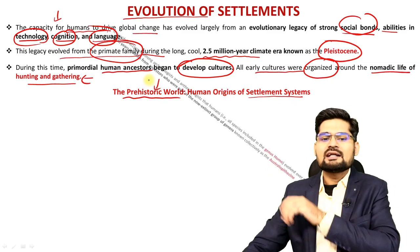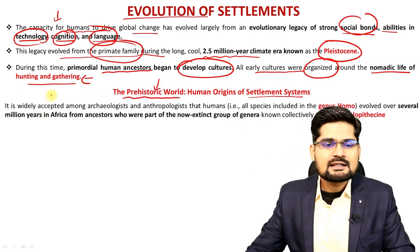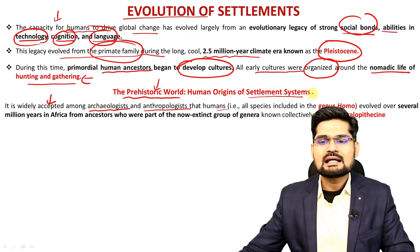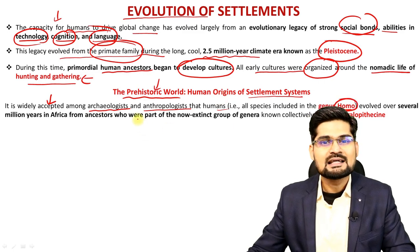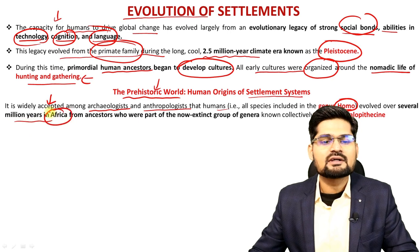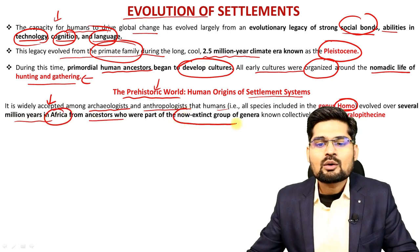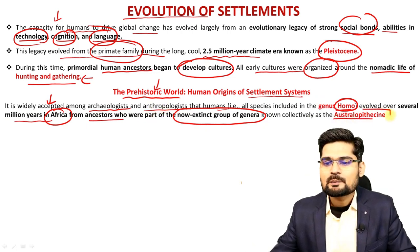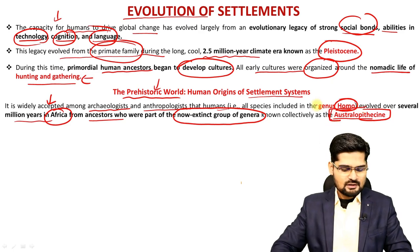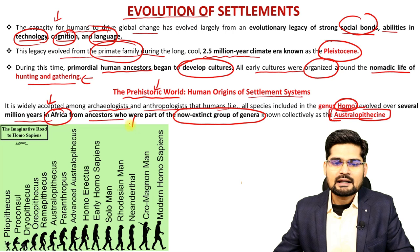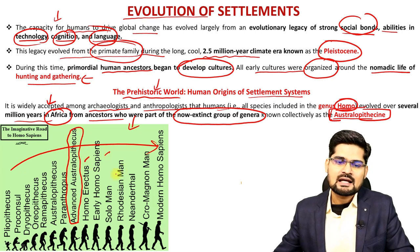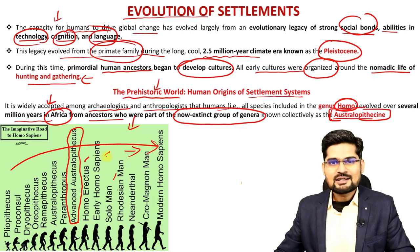To understand human origins of settlement systems, it is widely accepted amongst archaeologists, anthropologists, and geographers that the genus Homo — Homo sapiens — evolved over several million years in Africa from ancestors who were part of a now-extinct group collectively known as Australopithecus. The progression shows the advancement of the Australopithecus race, followed by Erectus, Sapiens, Solo Man, and several others.